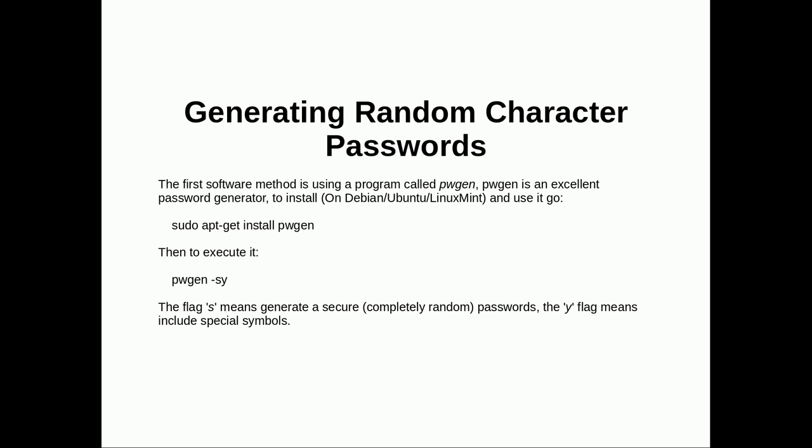Generating random character passwords. The first software method we use is a program called pwgen. pwgen is an excellent password generator. To install it on Debian, Ubuntu, or Linux Mint, use the command: sudo apt-get install pwgen. That basically means as a super user, with elevated privileges, use apt-get to install the program pwgen.